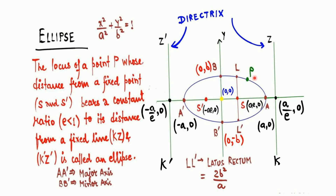There are two vertical lines called directrices. The coordinate for the left directrix is (−a/e, 0) and the equation is x = −a/e. For the right directrix the coordinate is (a/e, 0) and the equation is x = a/e. There is also a special term called latus rectum, just like in parabola. The latus rectum is calculated using the formula 2b²/a.